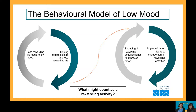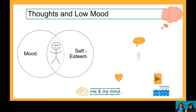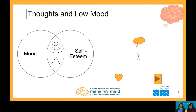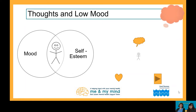When we feel down or low, our brains tend to focus more on unhappy memories and more difficult thoughts. We also naturally pay more attention to information from the world around us that confirms those thoughts. Having low mood can affect a person's self-esteem, and having low self-esteem can also be a cause of low mood. Our thoughts can also affect how we feel and what we do — when we feel low, it's easy for thoughts to get stuck on repeat, like a skipping CD.